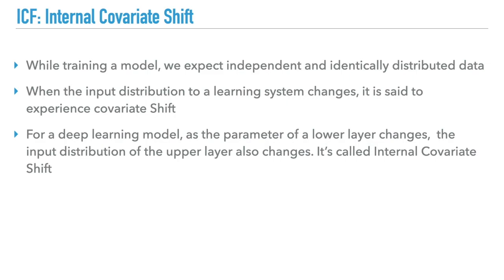Let's talk about what ICS is. ICS is short for internal covariate shifts. While training a model, we expect independent and identically distributed data. When the input distribution to a learning system changes, it is said to experience covariate shifts. For a deep learning model, as the parameters of a lower layer change, the input distribution of the upper layer also changes — this is called internal covariate shifts.